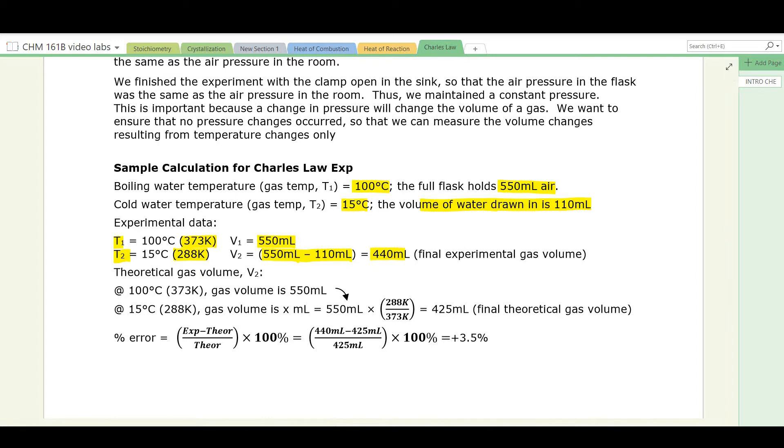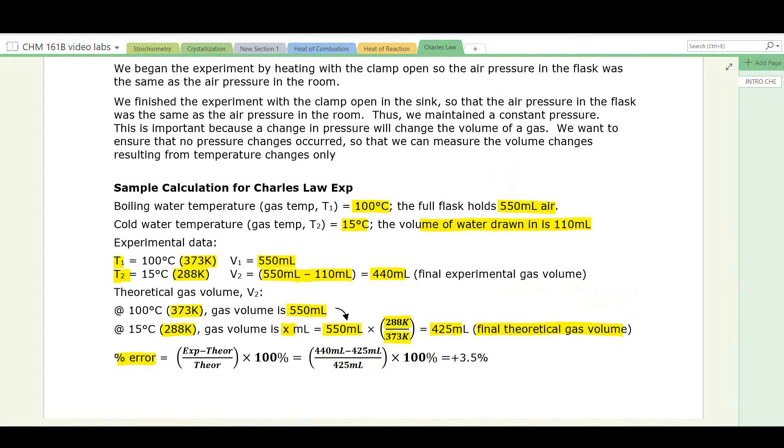So that's experimental. Let's calculate theoretical V2 using Charles' law. 100 degrees Celsius, 373 Kelvin, the gas was 550 mils in volume. At 15 Celsius or 288 Kelvin, the gas volume is x mils. x is equal to, start with volume if you're solving for volume, times a ratio that makes sense. It makes sense that you should put the small number over the big number because the temperature is decreasing so the volume decreases. That's 425 mils. That would be the theoretical gas volume. Let's calculate the percentage error. Measured minus the true over the true times 100. Measured was 440 in this example. The true is 425 divided by 425 times 100 is plus 3.5% error. Alright, let's take a look at the experiment.